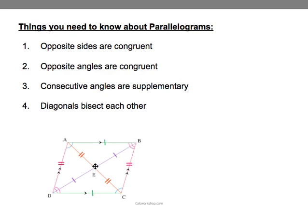So that this part, BE, is congruent to this part, and this part is congruent to this part. So that's what we're working with here.